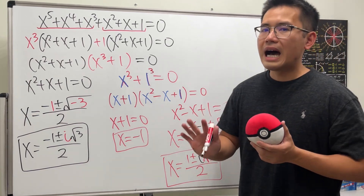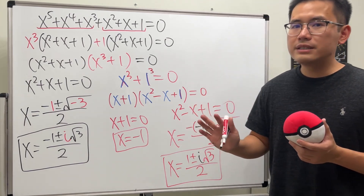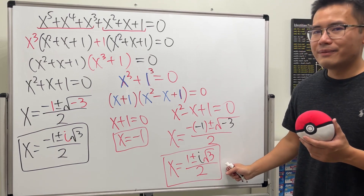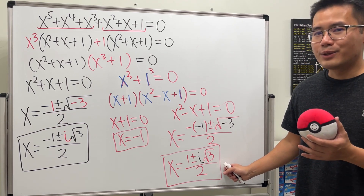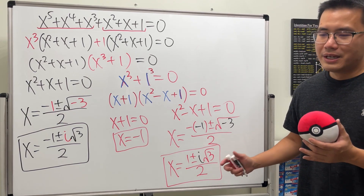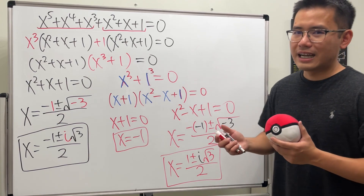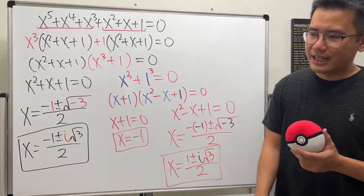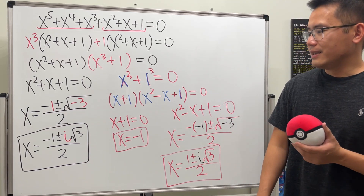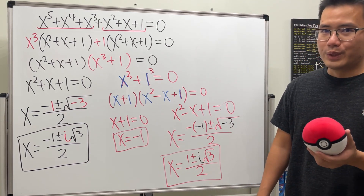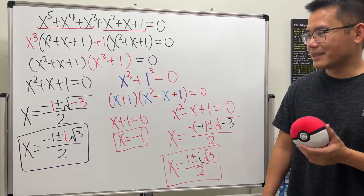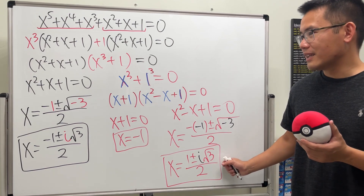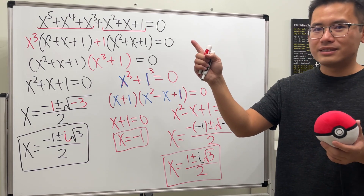In total we have five solutions, and once again they correspond to the expressions and trig values we found last time. If you want to see more videos like this, check out my other videos over there.